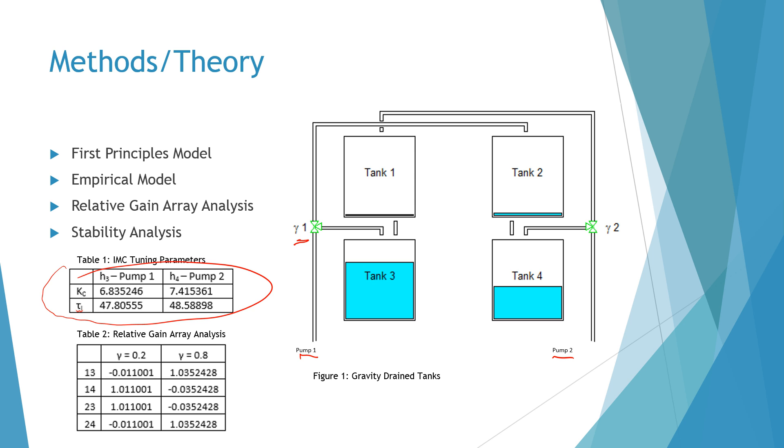From the same doublet test we performed a relative gain array analysis. The purpose of this analysis is to know which pairing is optimal between the manipulated and controlled variables. The results are shown in table two. The values closest to one are the manipulated and controlled variables that should be paired. Pump one and pump two are represented by the first number, and tank three and tank four by the second number.